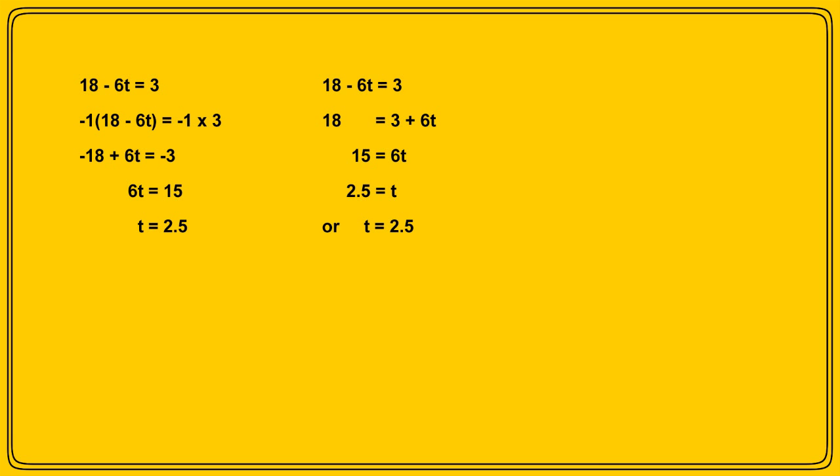Now to the second complication. What do we do if our variable is on both sides of the equation? And here's our example, remember 6m subtract 9 equals 12 subtract 4m. Somehow or other, we need to remove it from one side, so that we only have the variable on one side, either the left or the right.